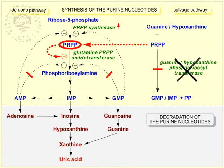Complete deficiency of guanine-hypoxanthine phosphoribosyl transferase causes Lesch-Nyhan syndrome. It is a still more serious disorder associated not only with gout, but also with neurological problems, mental retardation, aggressiveness, and self-mutilation.